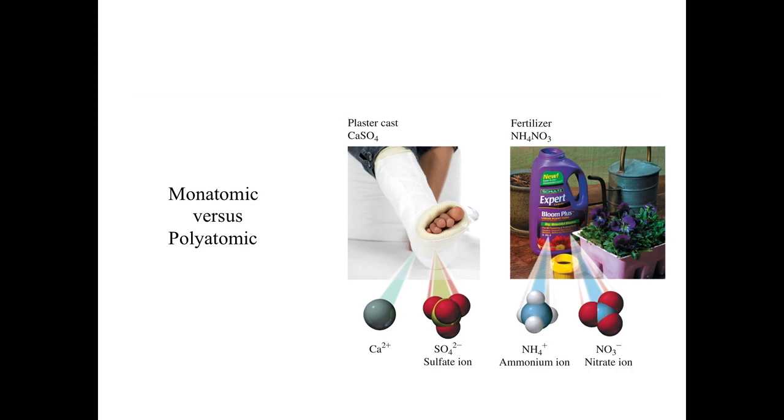Another example is your fertilizer. It is made of a polyatomic ion called ammonium as your cation and nitrate as your anion. Both of these are polyatomic ions.